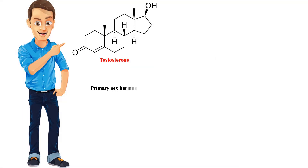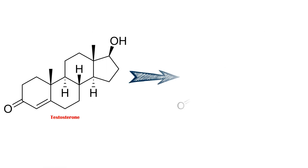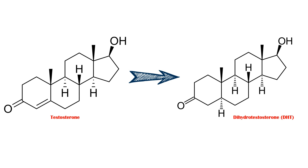Testosterone is the primary sex hormone in males, and it is responsible for many important functions, including sperm production, maintenance of sex drive, also called libido, and maintenance of muscle and bone mass. Testosterone is converted into dehydrotestosterone, or DHT, by the enzyme 5-alpha reductase.